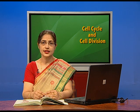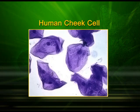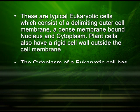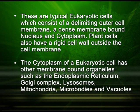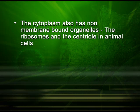You must have observed onion peel and human cheek cells under the microscope in your earlier classes. These are typical eukaryotic cells, which consist of a delimiting outer cell membrane, a dense membrane-bound nucleus and cytoplasm. Plant cells also have a rigid cell wall outside the cell membrane. The cytoplasm of a eukaryotic cell has membrane-bound organelles such as endoplasmic reticulum, Golgi complex, lysosomes, mitochondria, microbodies and vacuoles. The cytoplasm also has non-membrane-bound organelles: the ribosomes and, in animal cells, the centrioles.